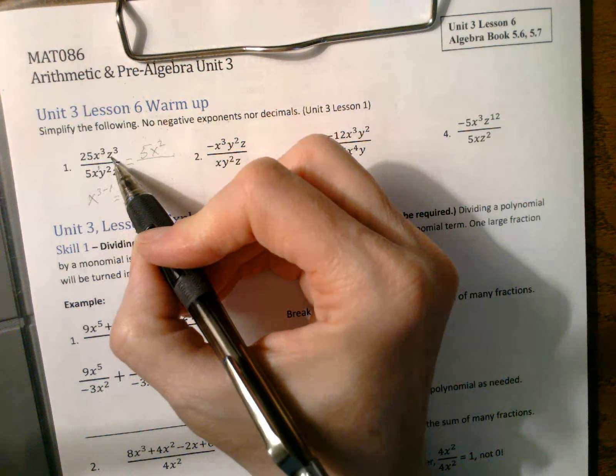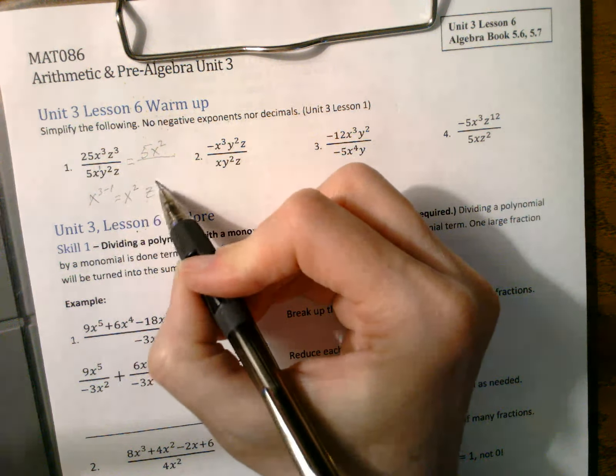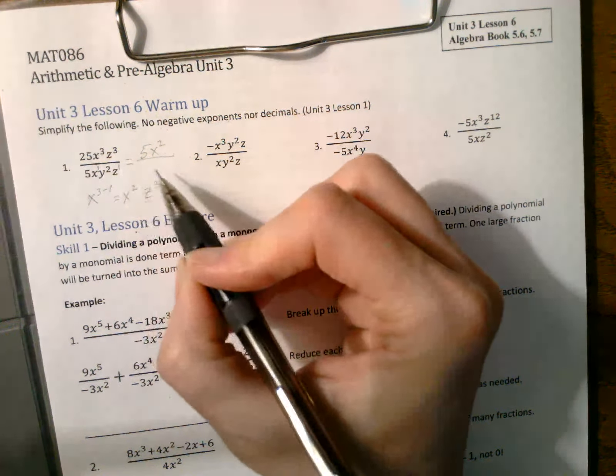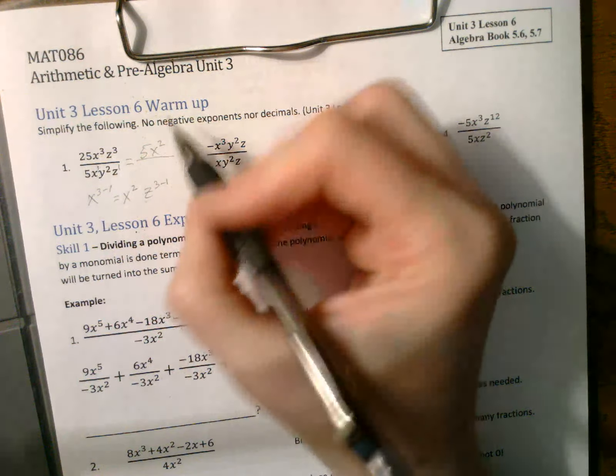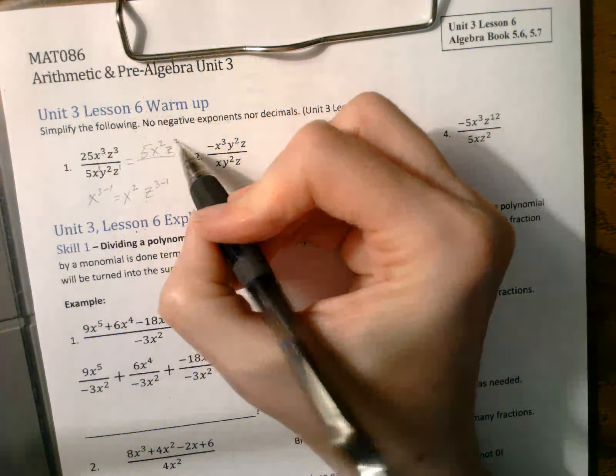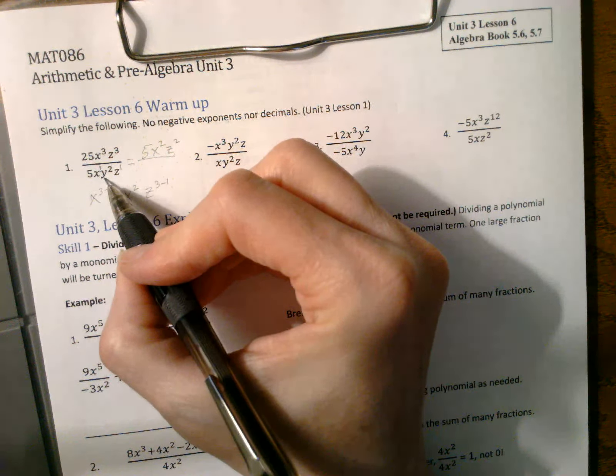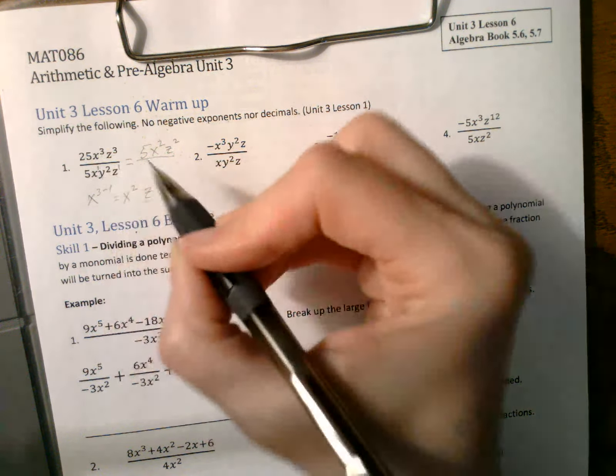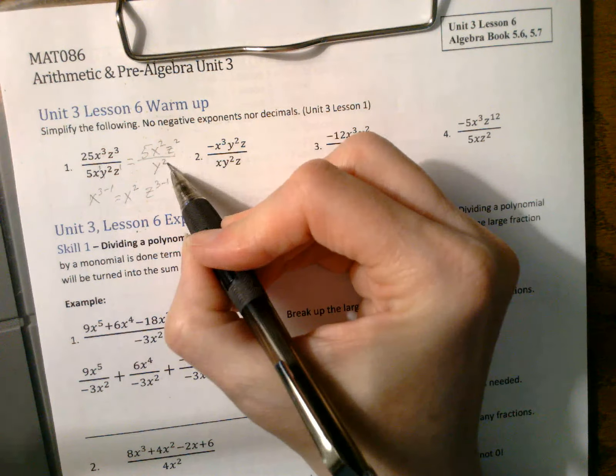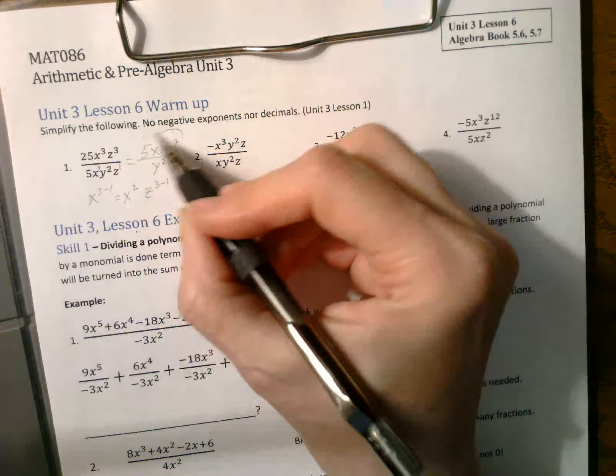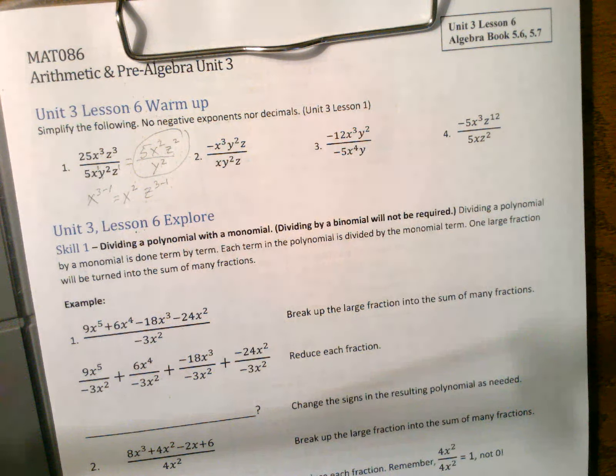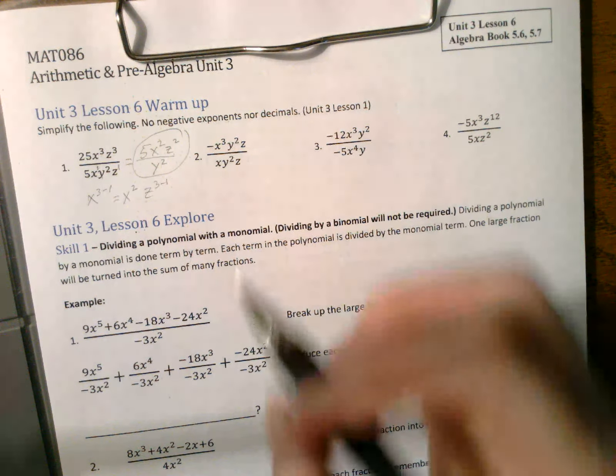And the z's are 3 minus 1, so that's z to the 2. And then notice here there is a y. There isn't any y's up here, so that stays right where it is. So that's the best I can do when I'm simplifying that one.